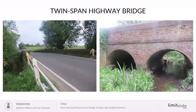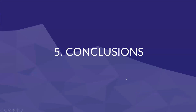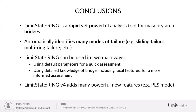Going back to the slides to wrap things up: Limit State Ring is a rapid yet powerful analysis tool for masonry bridges. It can automatically identify many modes of failure — hinging, sliding, multi-ring, and so forth. There are two usage modes: one, using default parameters for a quick assessment; and two, taking advantage of detailed knowledge of your structure to account for local features for a more informed assessment. The latest version, version 4, adds many powerful new features — for example, the permissible limit state mode — and many other features that haven't been covered today.